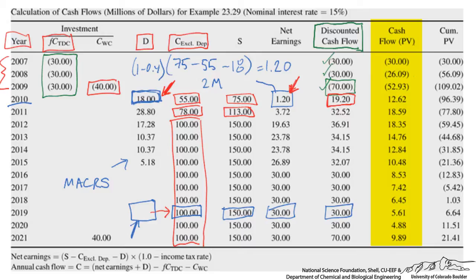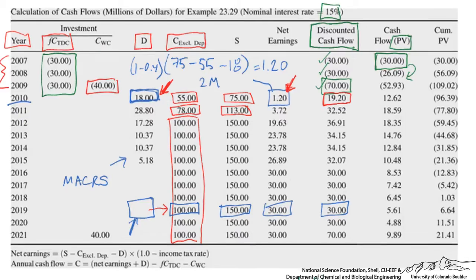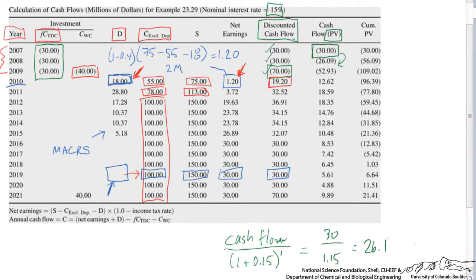Present value cash flow is more difficult to calculate. For the first operating year, we take the cash flow and divide by (1 + 0.15)^1, giving $26.1M. For 2019, we take the $30M cash flow and divide by (1.15)^11, giving $5.61M. This means the present value of cash flow in 2019 is only worth about $5.6 million in today's dollars.